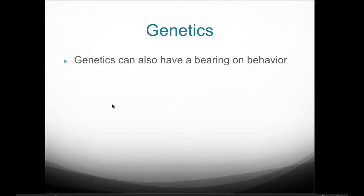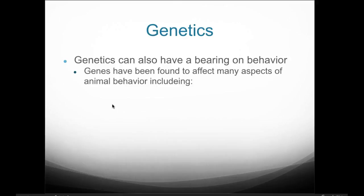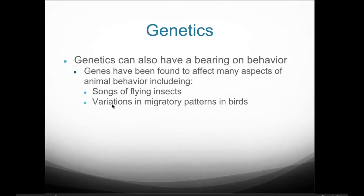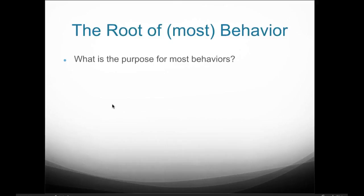Genetics can have a bearing on behavior. Genes have been found to affect many aspects of animal behavior, including songs of flying insects, variations in migratory patterns seen in some birds, and prey selection in reptile species. Ultimately, the root purpose of most behavior is increased individual survival and reproductive success.